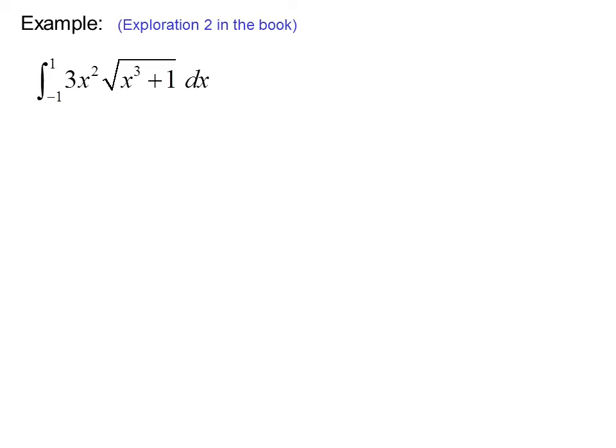Here's another example. The integral from negative 1 to 1 of 3x squared times radical x cubed plus 1 dx. Once again, we see a function or an expression x cubed plus 1 and its derivative, 3x squared. So that gives us a hint that this is a substitution problem. We let u equal x cubed plus 1, du equals 3x squared dx, u of negative 1 equals 0. I get that by putting negative 1 into the expression for u. And I get negative 1 plus 1 or 0. u of 1 equals 2.